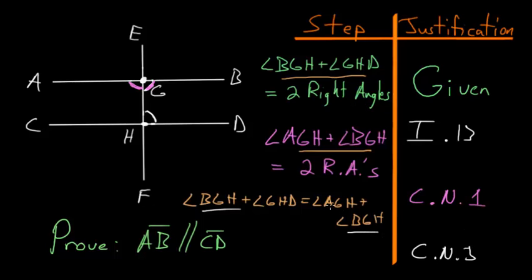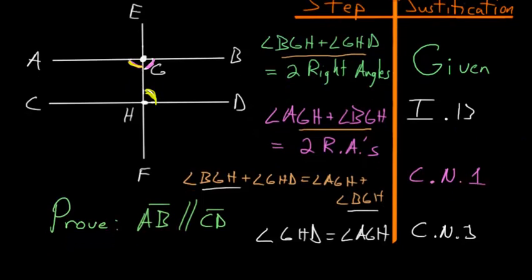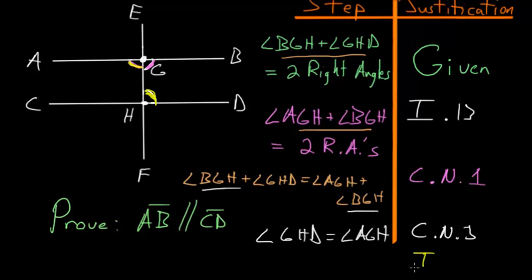And what we're left with is that angle GHD is equal to angle AGH. Or in other words, we know due to Book 1 Proposition number 27 that if the alternate angles are equal, then we know that the lines AB and CD are parallel.